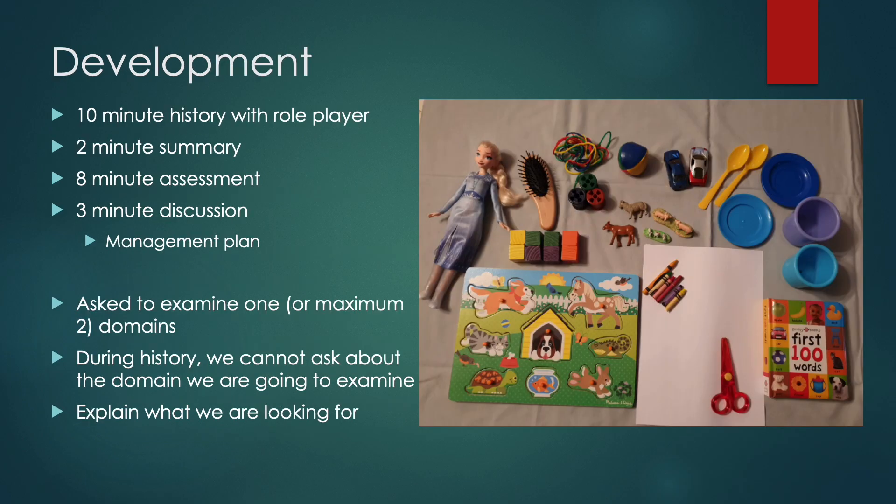The development station is the first one that's probably significantly different to previously. It's a 23-minute station: there's a 10-minute history from the role player, and then a two-minute summary to the examiner on the history. The next part of the station is an eight-minute assessment of development, and then a three-minute discussion.